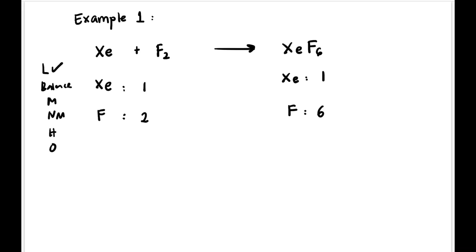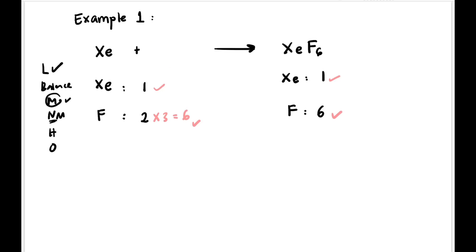Now it's time to balance using lb mnm ho. Balance metal first — do you have metal? No metal, so proceed. Xe is already balanced, one and one. Now focus on fluorine: there are two F, multiply by three, so we put coefficient 3 in front of F₂ to get six — balanced. Note: you cannot change the subscript in F₂ to 6; never do that. The formula F₂ is given in the question, so we only add a coefficient in front of it.